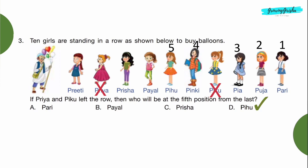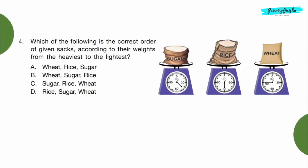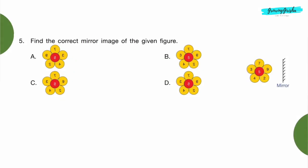First put a cross on Priya and Piku. Now count from the last, so P2 will be at the fifth position. Option D. Question 4: Which of the following is the correct order of given sacks according to their weights from the heaviest to the lightest? Weight of sugar is 45 kg, weight of rice is 60 kg, and weight of wheat is 90 kg. Now arrange the units in descending order: 90 kg, then 60 kg, then 45 kg.